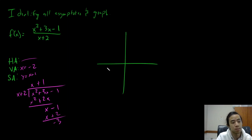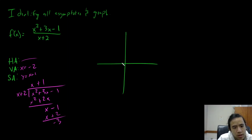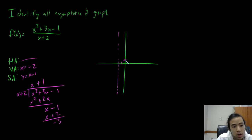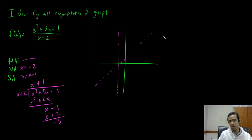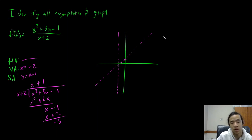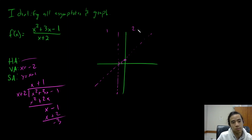All we have to do is plot both of these asymptotes. Let's plot x equals negative 2, something like this, and then y equals x plus 1, something like this. There's our slant asymptote — as you can see, it's a slanted line. Now we just have to plug in a couple of points in each region: the region to the left and the region to the right.